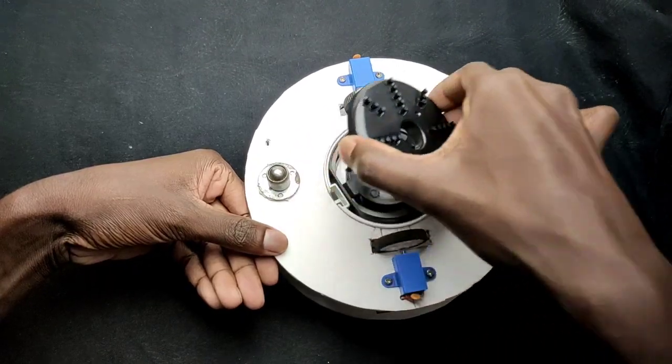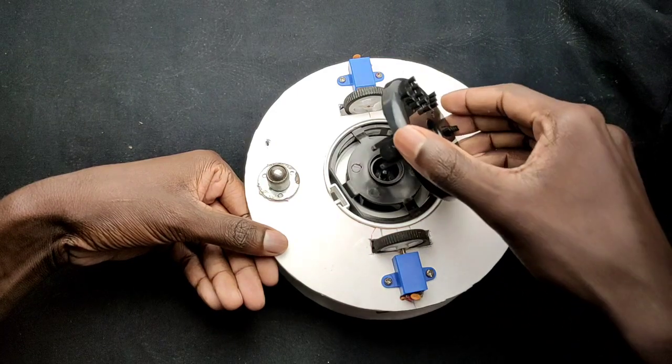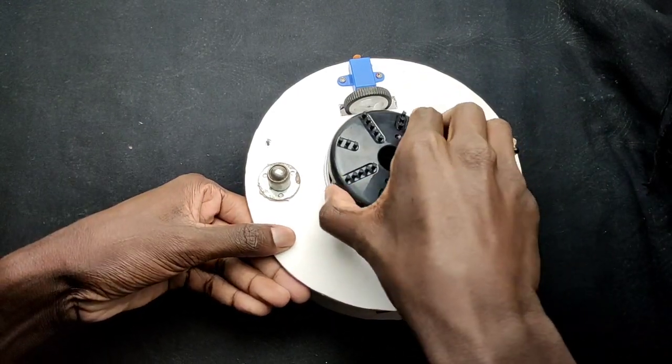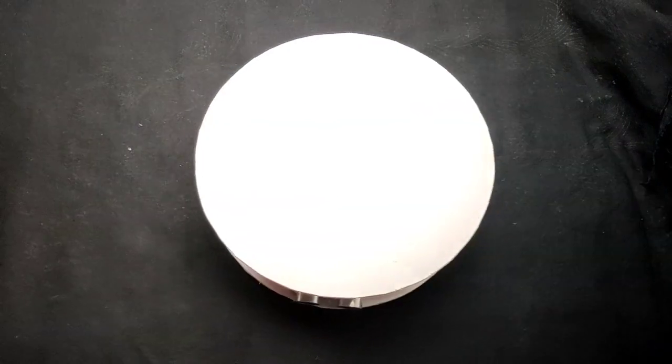We can open the cap of the vacuum cleaner by pressing the cap. Now let's see the working of the robot.